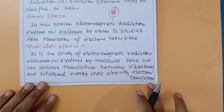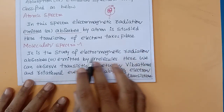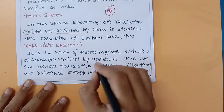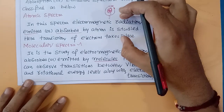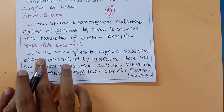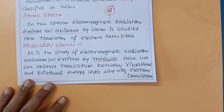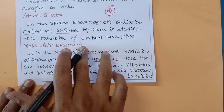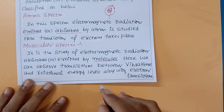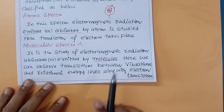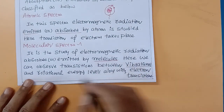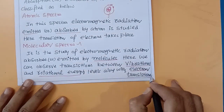The second type is molecular spectra, which we will study further. Molecular spectra is the study of electromagnetic radiation absorbed or emitted by molecules. In atomic spectra, only electrons transition — from ground state to excited state and back. In molecular spectra, when electromagnetic radiation interacts with molecules, the molecules may vibrate or rotate.